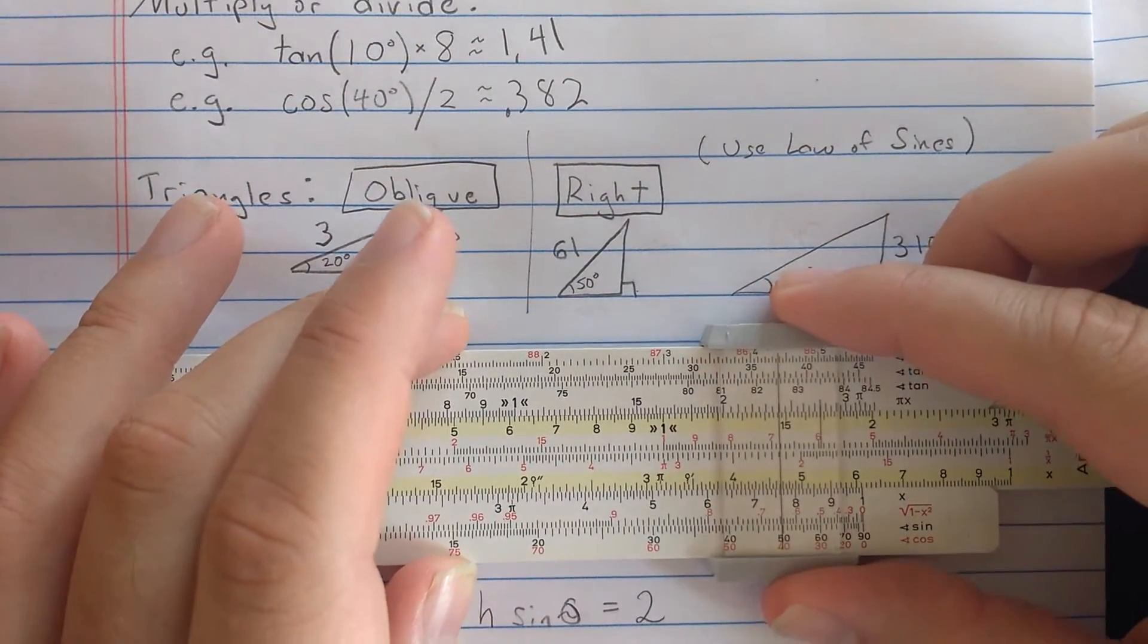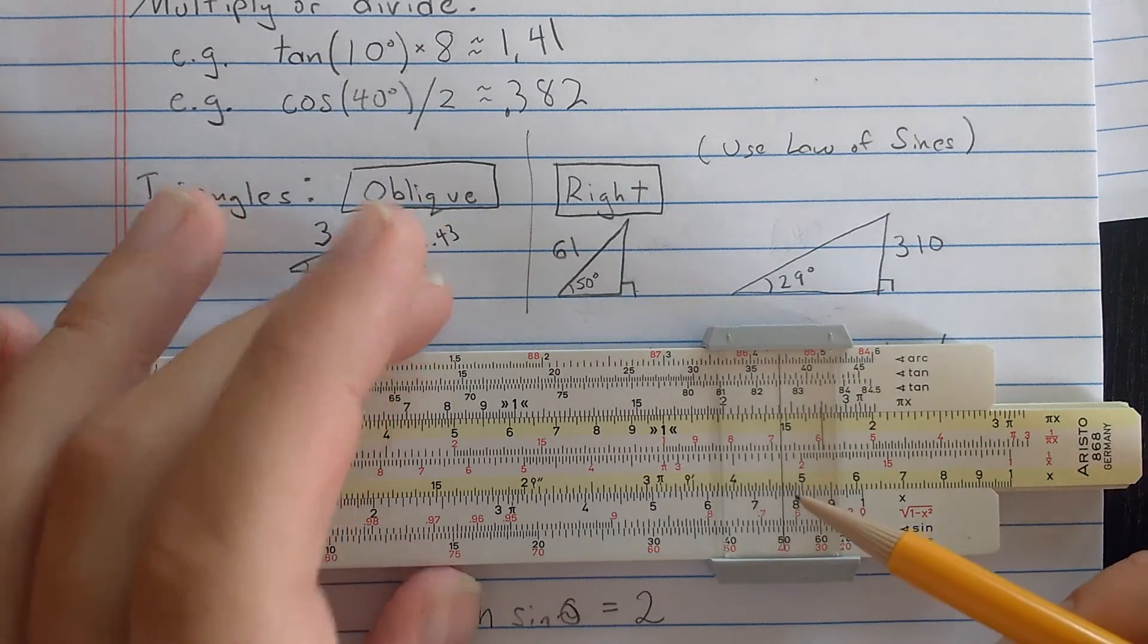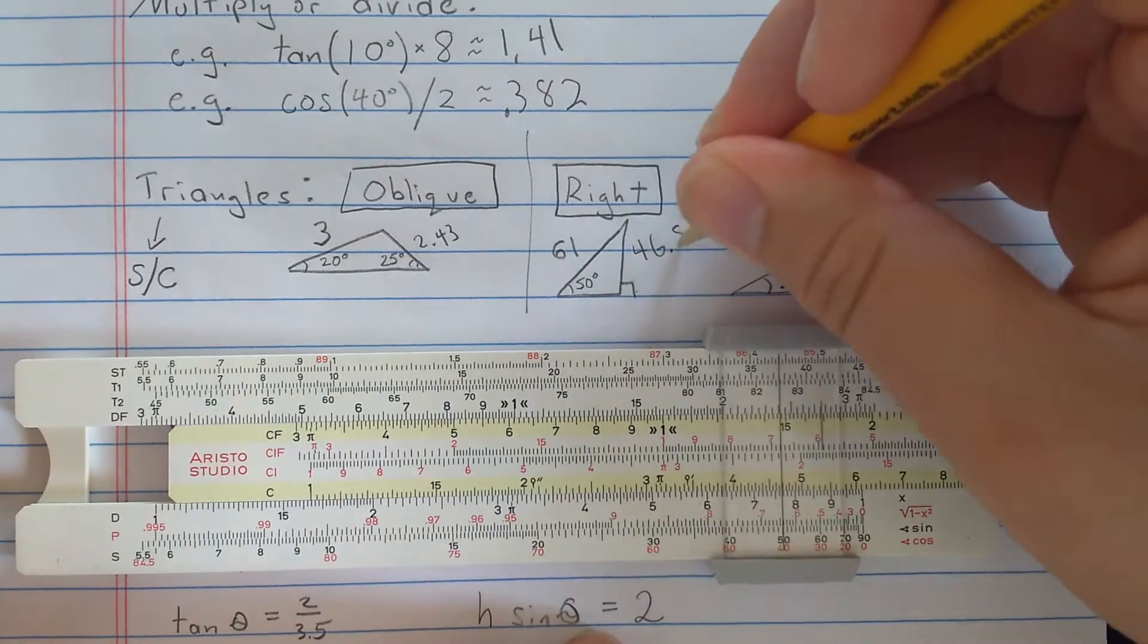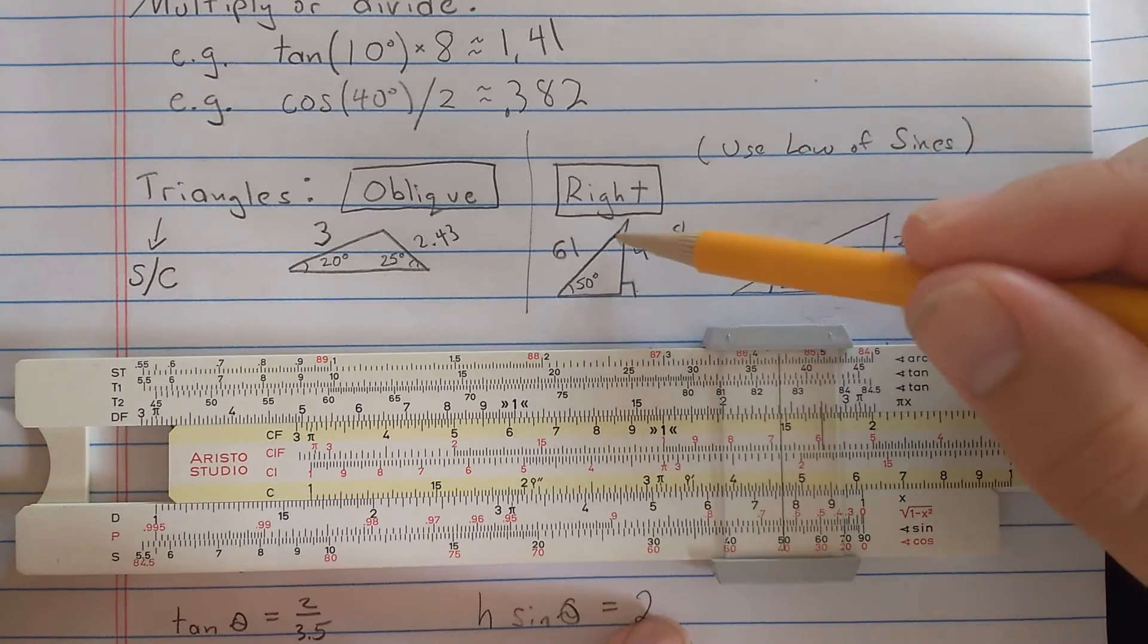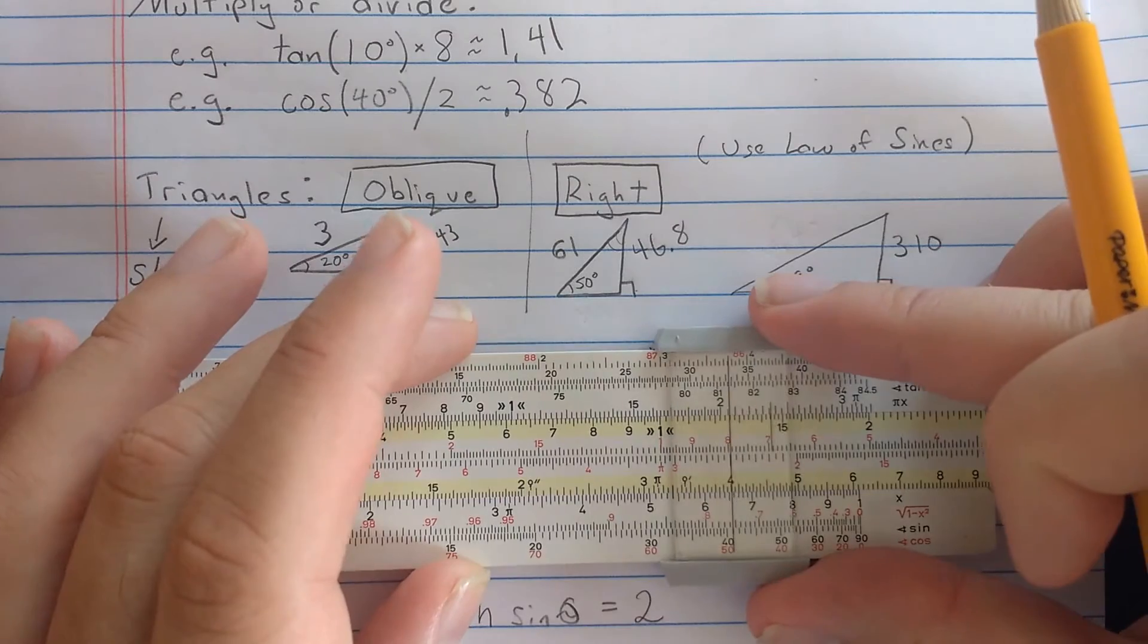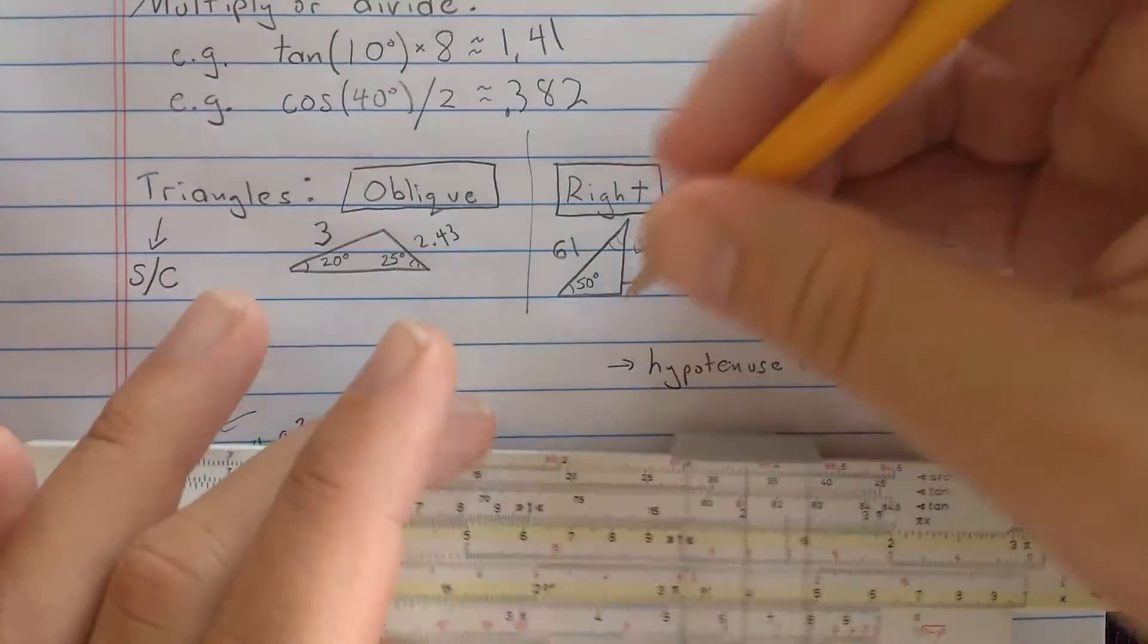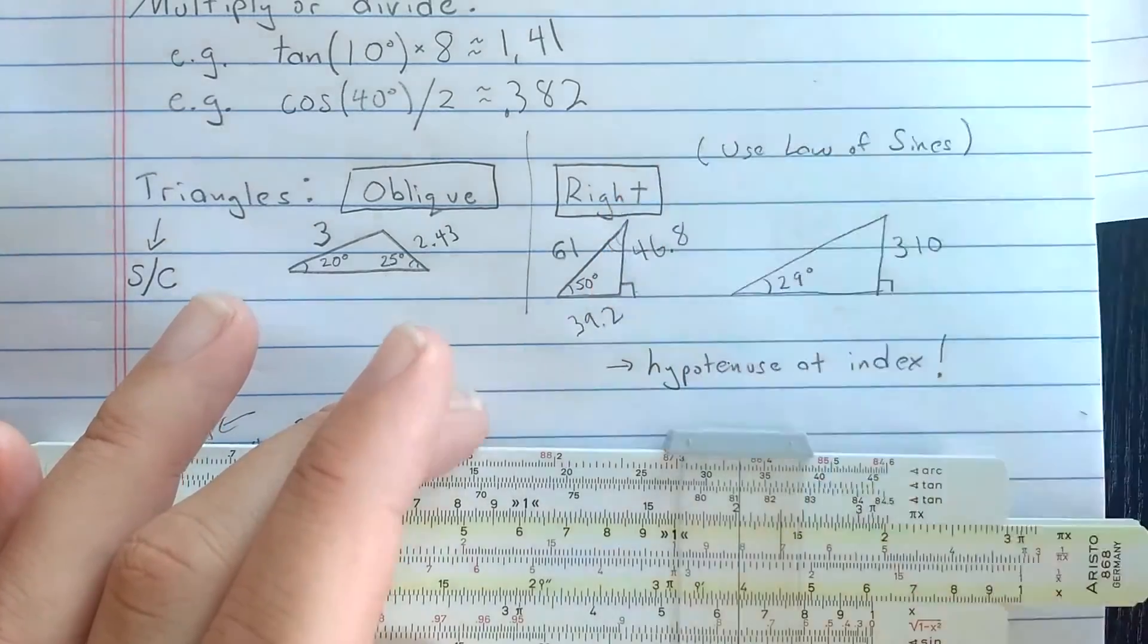So I put 6.1 over 90, then if I set the cursor to 50 degrees, I read on the C scale about 46.8, let's say, for that side. And then, of course, to find the other side, I need the complementary angle. So I'll use the cosine scale, which is marked with the complementary angle. So finding 50 in red there. And then I see the result here about 3.92. Or 39.2.